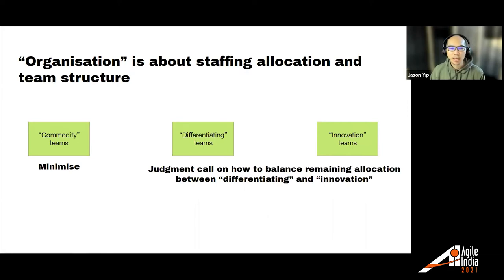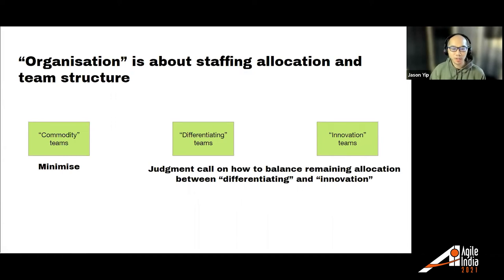Between differentiating and innovation, it's more of a judgment call — a decision based on your product strategy about how much allocation you want toward innovation and experimental things versus differentiating. If you think about it in terms of revenue, you're not really making money off innovation things yet. They're more for the future. So depending on your situation, how much you can afford to plan for the future versus dealing with what gives benefit now is a call that needs to be made at a business department level.